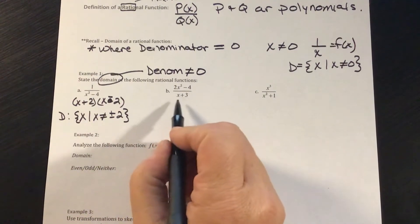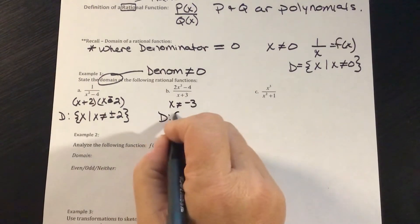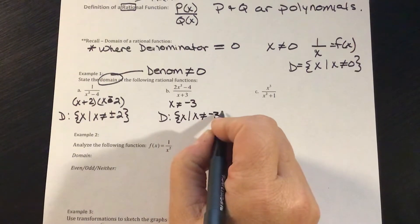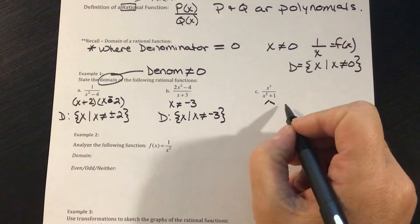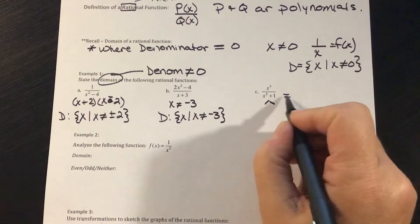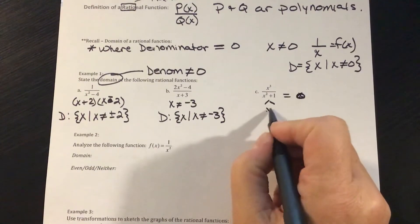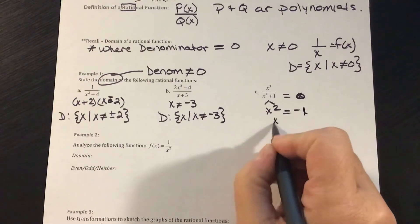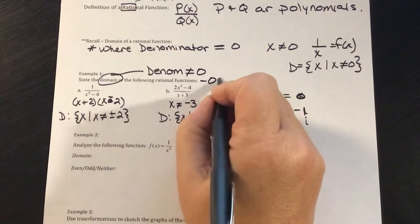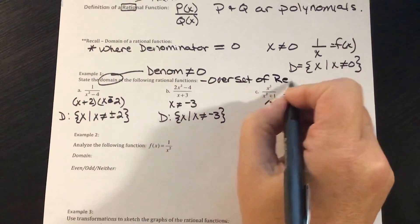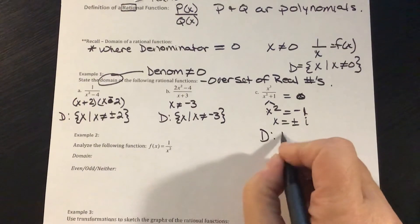In part B, nothing to factor, but X cannot equal negative 3, or that would make the denominator 0. So my domain is all X where X cannot equal negative 3. For part C, setting the denominator equal to 0 gives X squared equals negative 1, so X is plus and minus i. Since we're looking at the domain over the real numbers, imaginary numbers aren't included, so the domain is all real numbers.